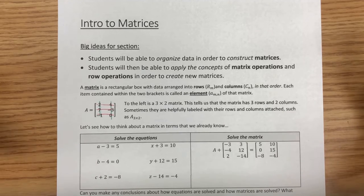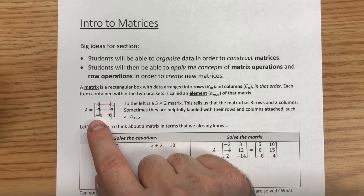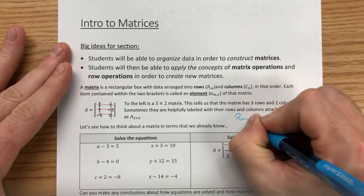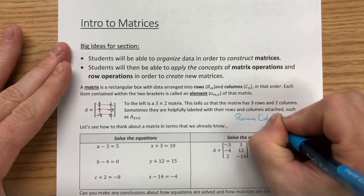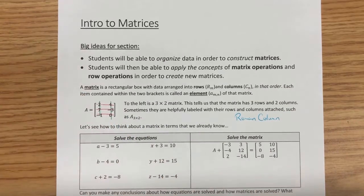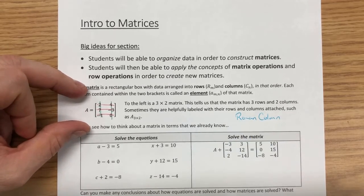An easy way to remember that is that a matrix is always a Roman column. And that idea is that the matrix itself looks like a little bit of a Roman column. So Roman column says rows always come first before the columns.